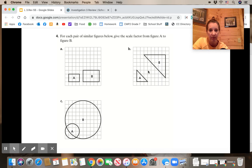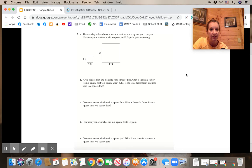Notice this one looks like it's been flipped. Question 5 says the drawing below shows how a square foot and a square yard compare. How many square feet are in a square yard? Explain your reasoning. B, are square foot and a square yard similar? If so, what is the scale factor from foot to yard and then what is the scale factor from yard to foot?